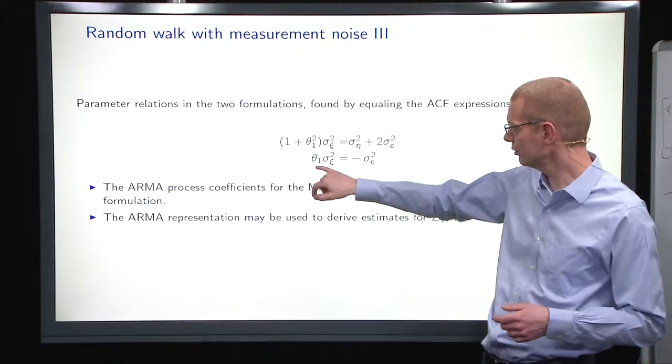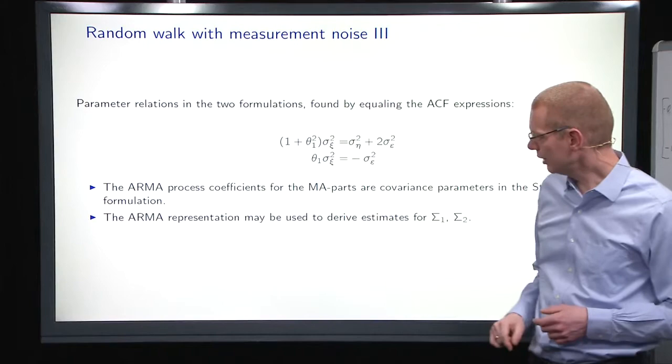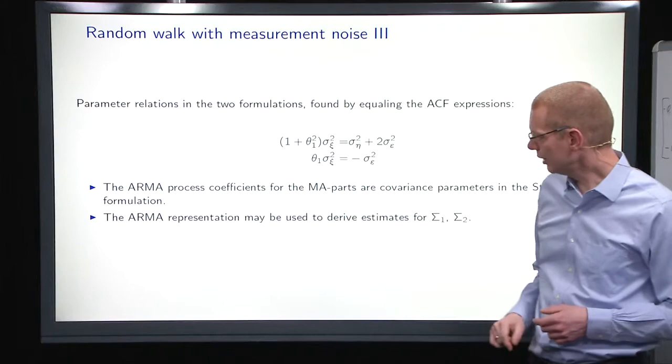And then what we see here is when we solve this equation, we have two unknowns, the θ1 and σ²ε here, then we see that it only depends on the variances in the state-space formulation. So the coefficients here come from the covariance parameters in the state-space formulation.